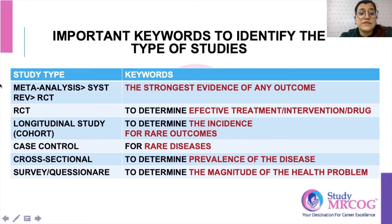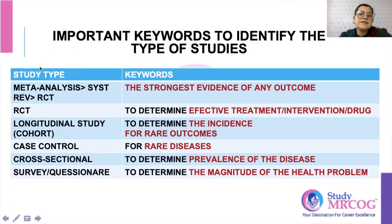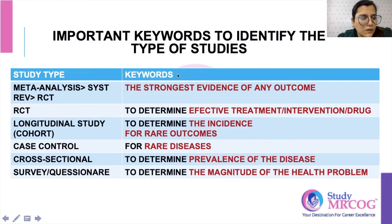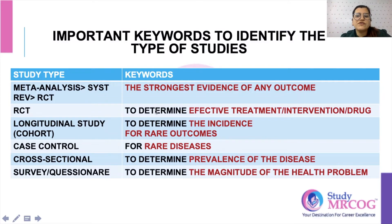If a question asks for the strongest evidence of any outcome, the answer is meta-analysis. In evidence-based medicine there is a pyramid, and meta-analysis sits at the top. If a question asks what should be used to determine the most effective treatment, intervention, or drug, the answer is RCT.